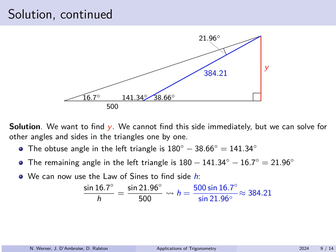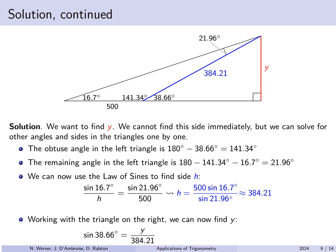We mark off the hypotenuse of the right triangle as 384.21. Looking at that smaller right triangle on the right, we can find its height. Because it's a right triangle, we know the hypotenuse and the angle of 38.66 degrees. So sine of 38.66 degrees equals y divided by 384.21. We solve for y to get approximately 240 feet — the height of the Taj Mahal.